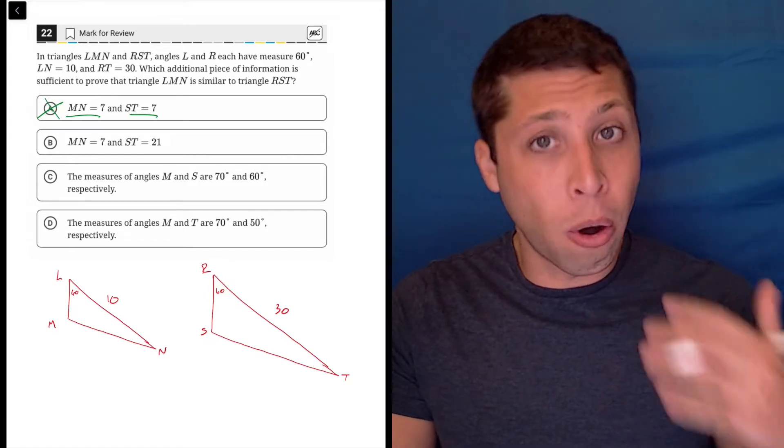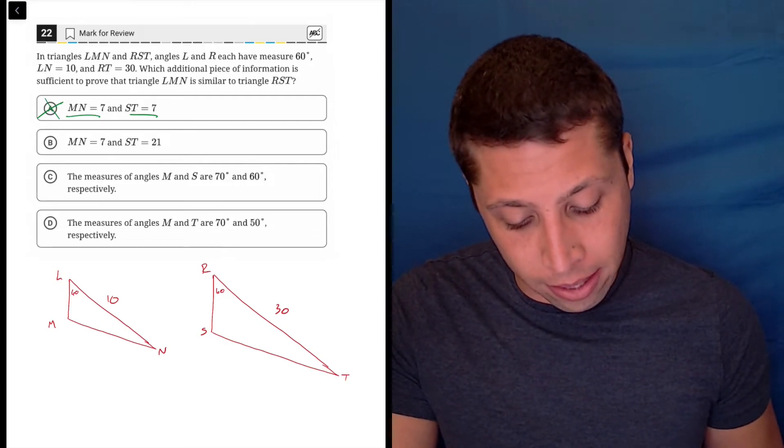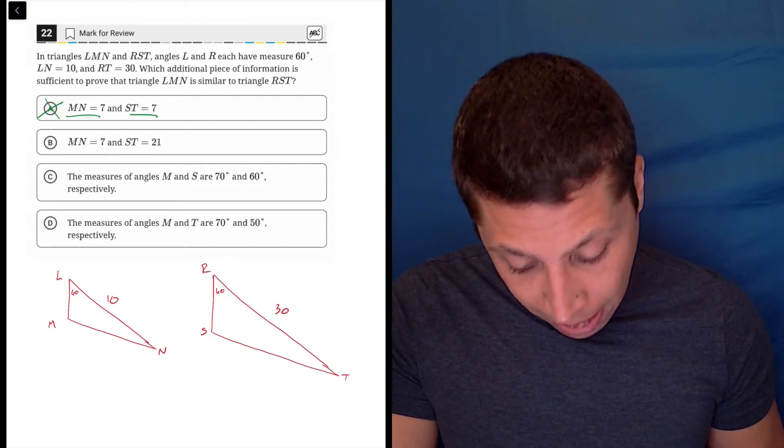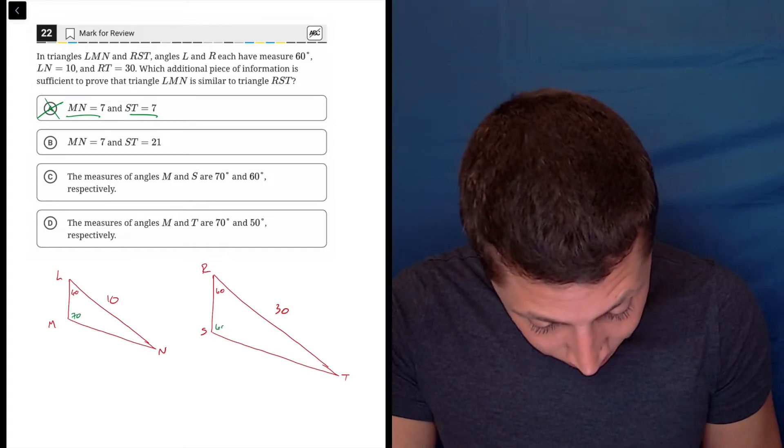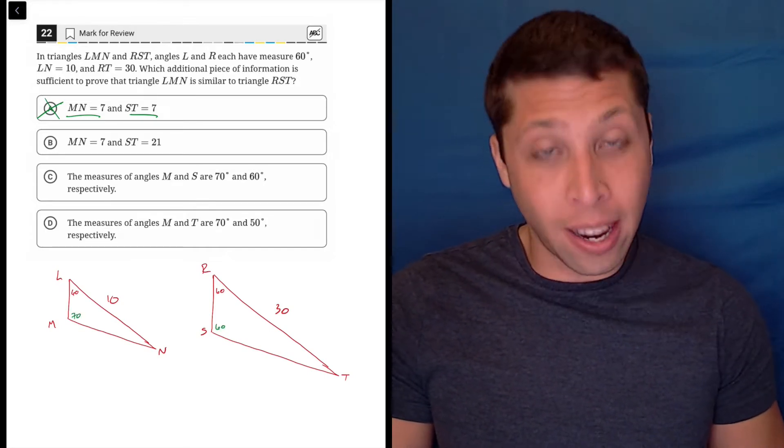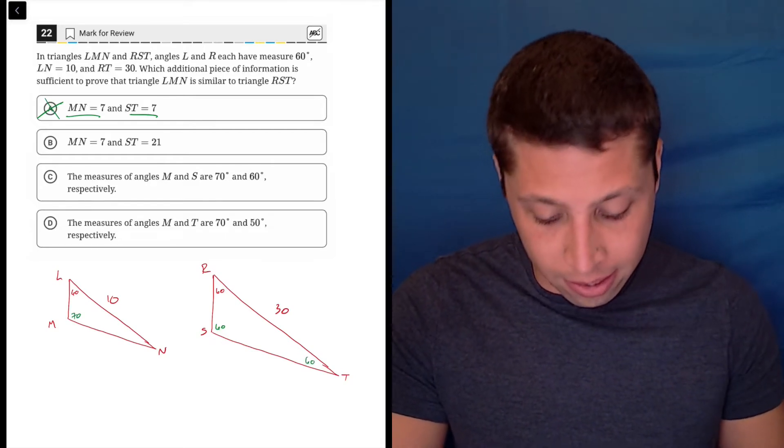Choice C also hopefully, if you plot that on the pictures, you can see that doesn't make sense, because if M were 70 and S were 60, we'd have a bit of a problem, because then, I know I didn't draw it this way, but the right-hand triangle would be 60-60-60, right, an equilateral triangle.